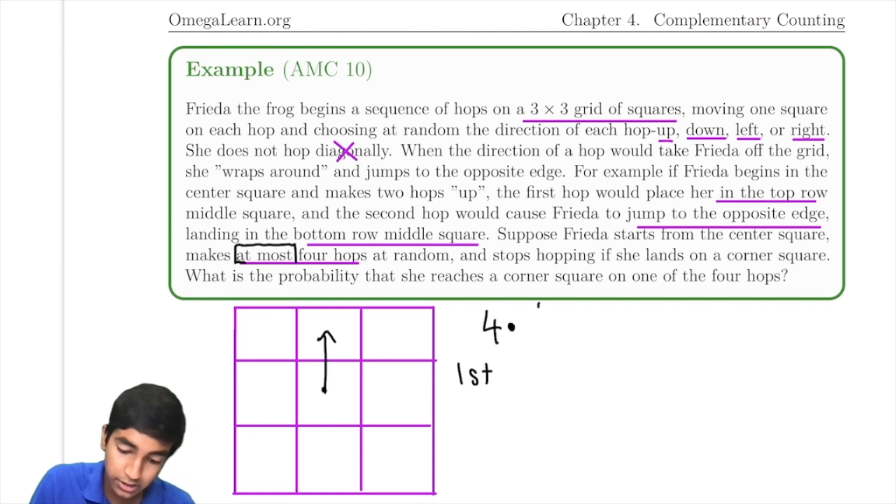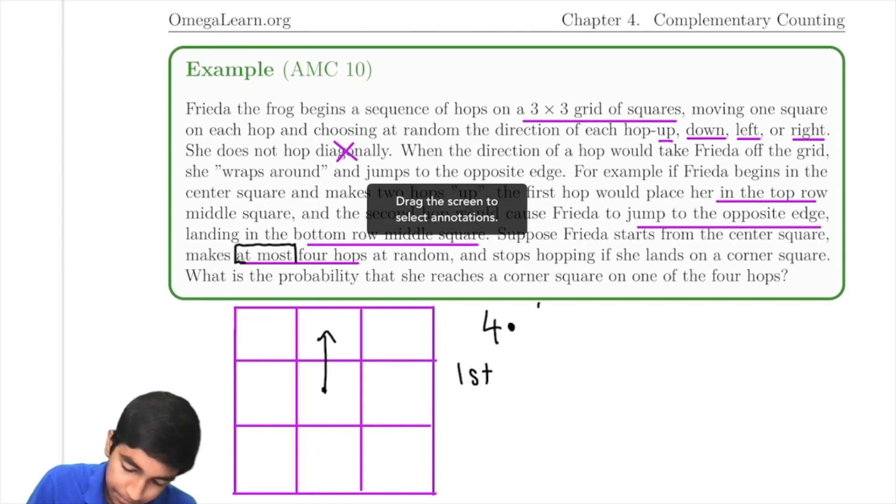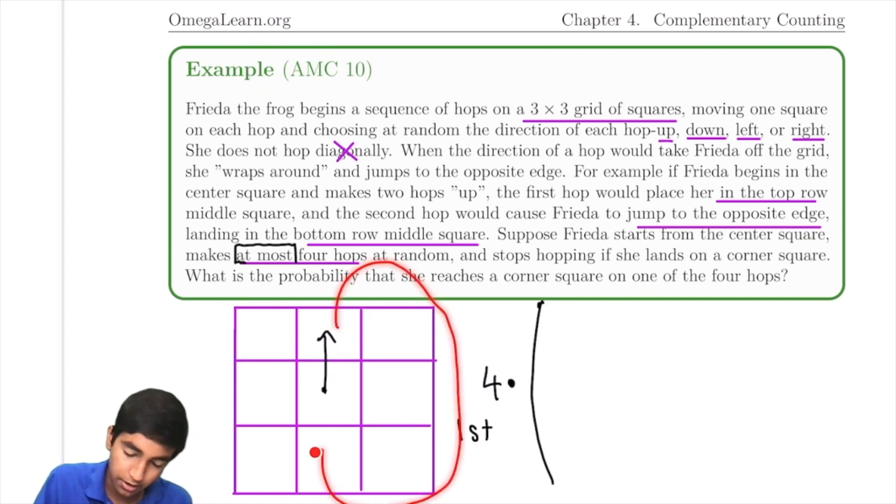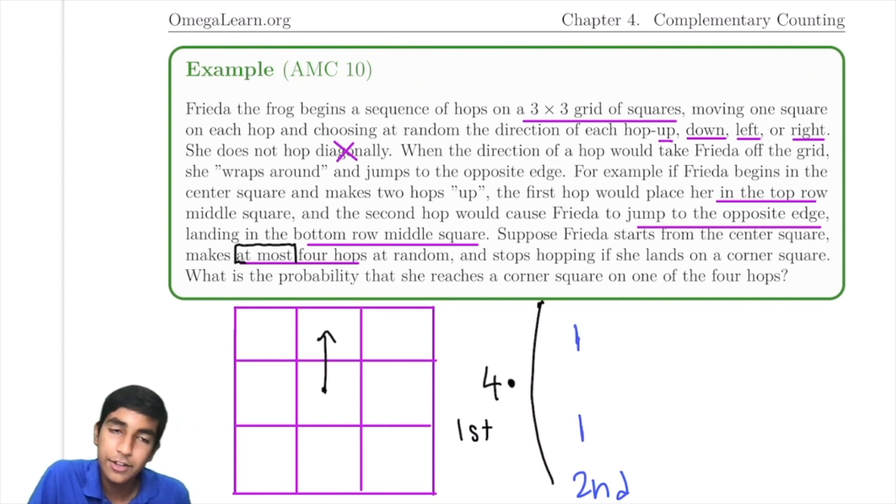For the first hop, we have four choices. Now from here, assuming Frida moves up, how many choices do we have for the second hop? We'll actually have to use cases in this case. From here, remember, we're trying to not reach a corner square. So we can either move down, back to the center square, or we can wrap around and move to this edge here. Frida has one way to move back to the center, and one to an edge. One way to go to the center, and one for the edge.